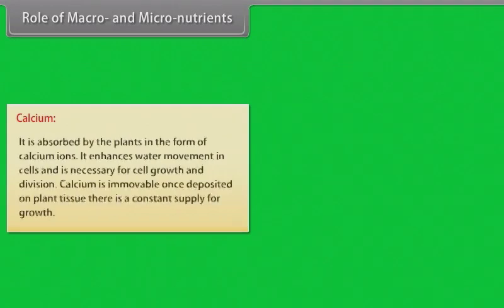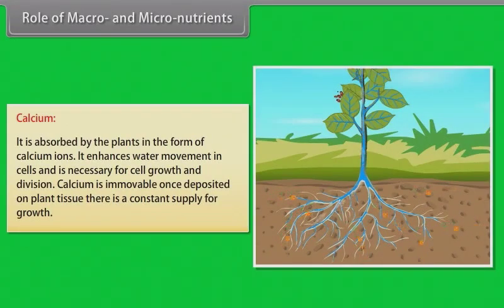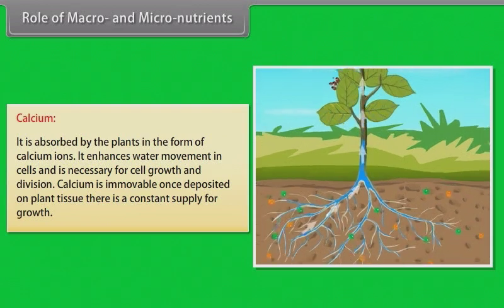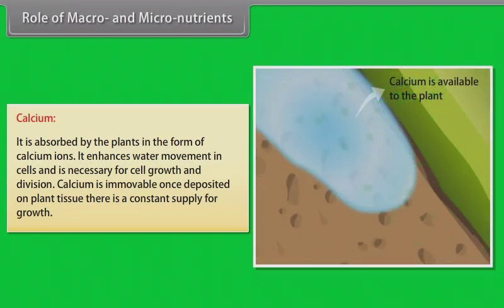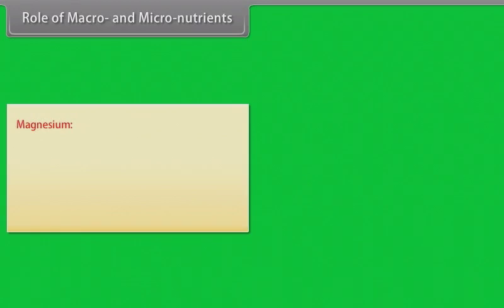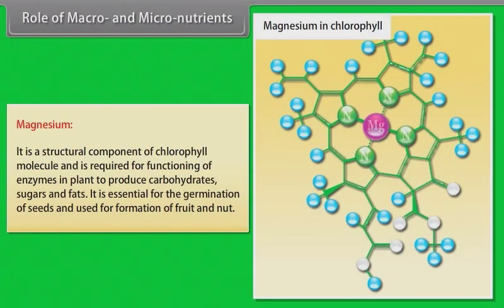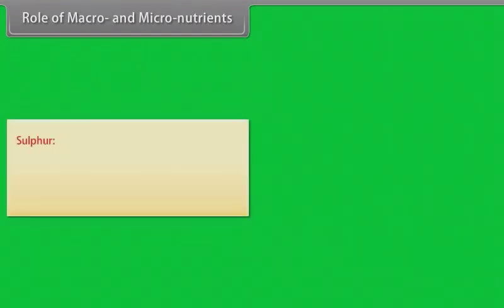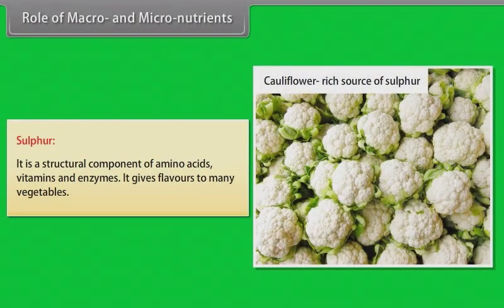Calcium: it is absorbed by plants in the form of calcium ions. It enhances water movement in cells and is necessary for cell growth and division. Calcium is immovable — once deposited on plant tissue, there is a constant supply for growth. Magnesium: it is a structural component of the chlorophyll molecule and is required for functioning of enzymes in the plant to produce carbohydrates, sugars and fats. It is essential for the germination of seeds and used in the formation of fruit and nuts. Sulfur: it is a structural component of amino acids, vitamins and enzymes, and gives flavor to many vegetables.